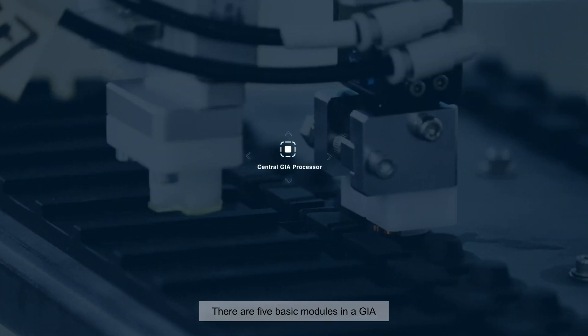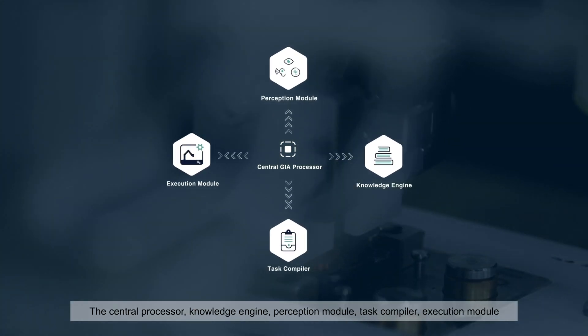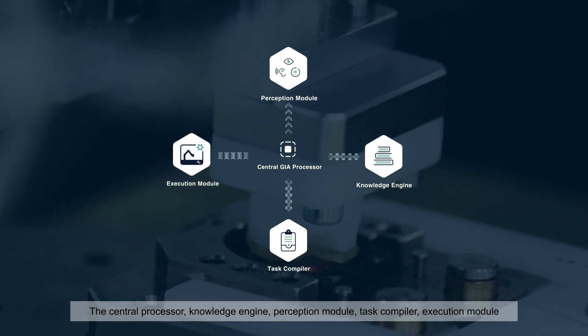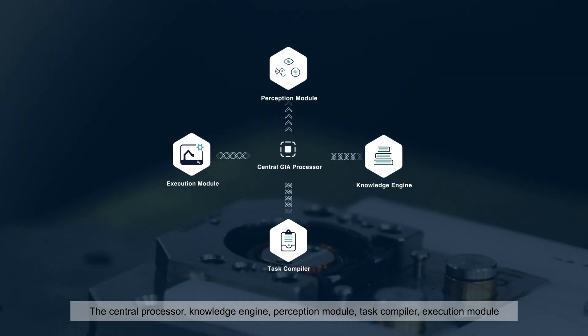There are five basic modules in a GIA: the central processor, knowledge engine, perception module, task compiler, and execution module.